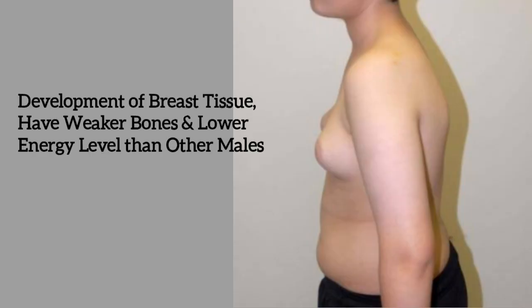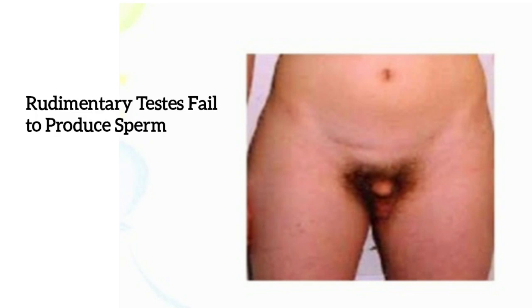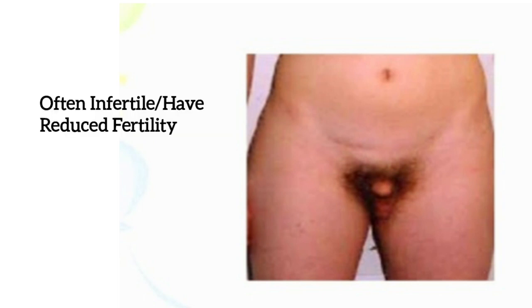Teens with XXY males may develop breast tissue and also have weaker bones and a lower energy level than other males. In adults, their testes are rudimentary and fail to produce sperm. So they are often infertile or have reduced fertility.